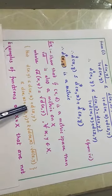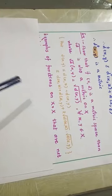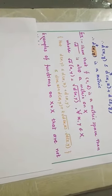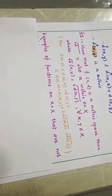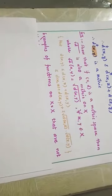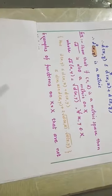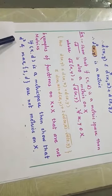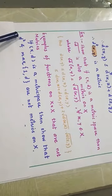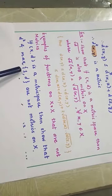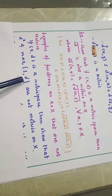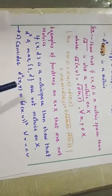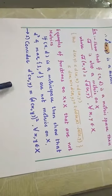Now we come to some examples of functions which are not metrics. So far we have proved that given functions are metrics. Now we will see that D² is not a metric, and max(1, D) is also not a metric. We will directly prove some condition which is not true.